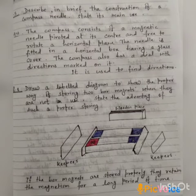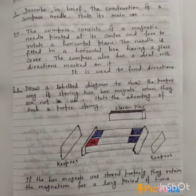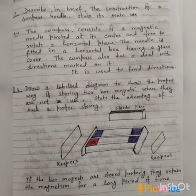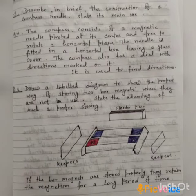Question number three: describe the construction of a compass needle and state its main use. The compass consists of a magnetic needle pivoted at its center, free to rotate in a horizontal plane. The needle is fitted in a box with a glass cover, and the compass has a dial with directions marked on it. Its main use is to find direction.